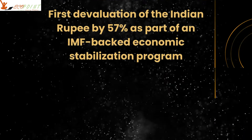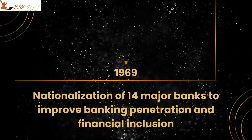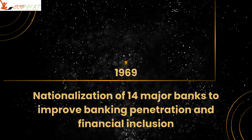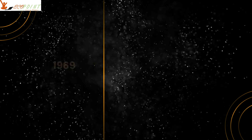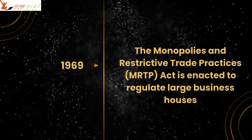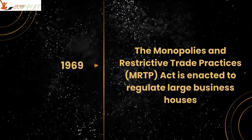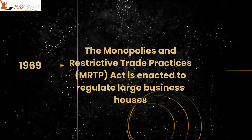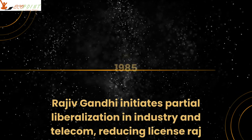In 1969, 14 major Indian banks were nationalized. In the same year, the MRTP Act was also introduced to regulate large business houses.